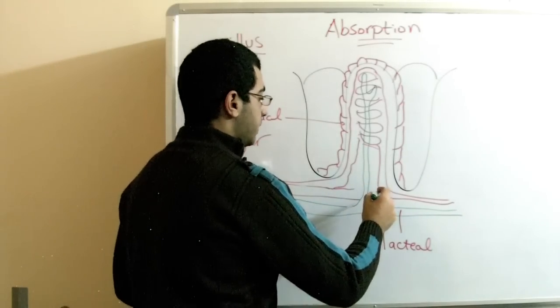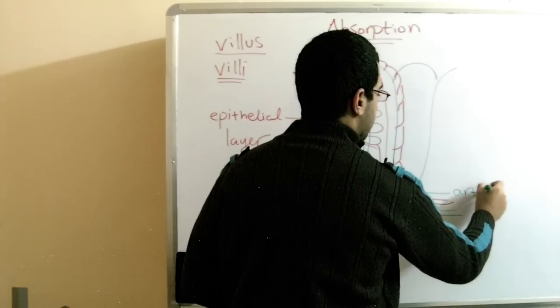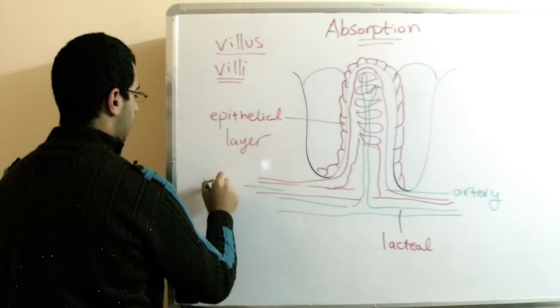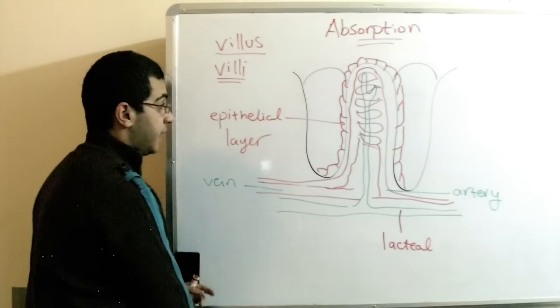So for example, these may be arteries and this may be a vein. So this is the structure of the villus.